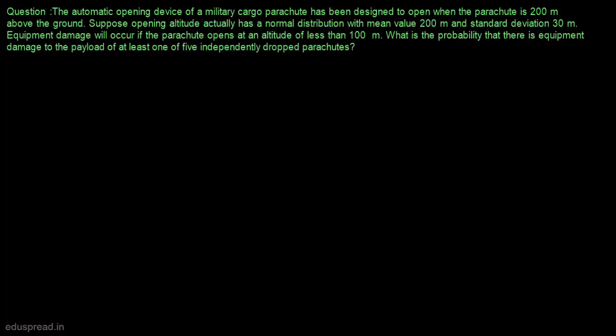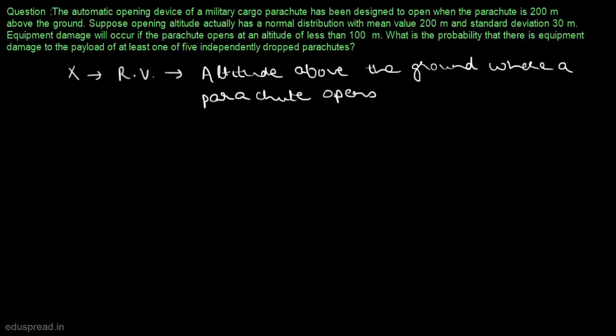First of all, let us define a random variable X, which denotes the altitude above the ground where a parachute opens. Now let us determine the probability that there is damage to a given parachute. As given in the question, equipment damage will occur if the parachute opens at an altitude of less than 100 meters. So that means to find the probability that equipment damage will occur, we have to find the probability that X is less than or equal to 100.